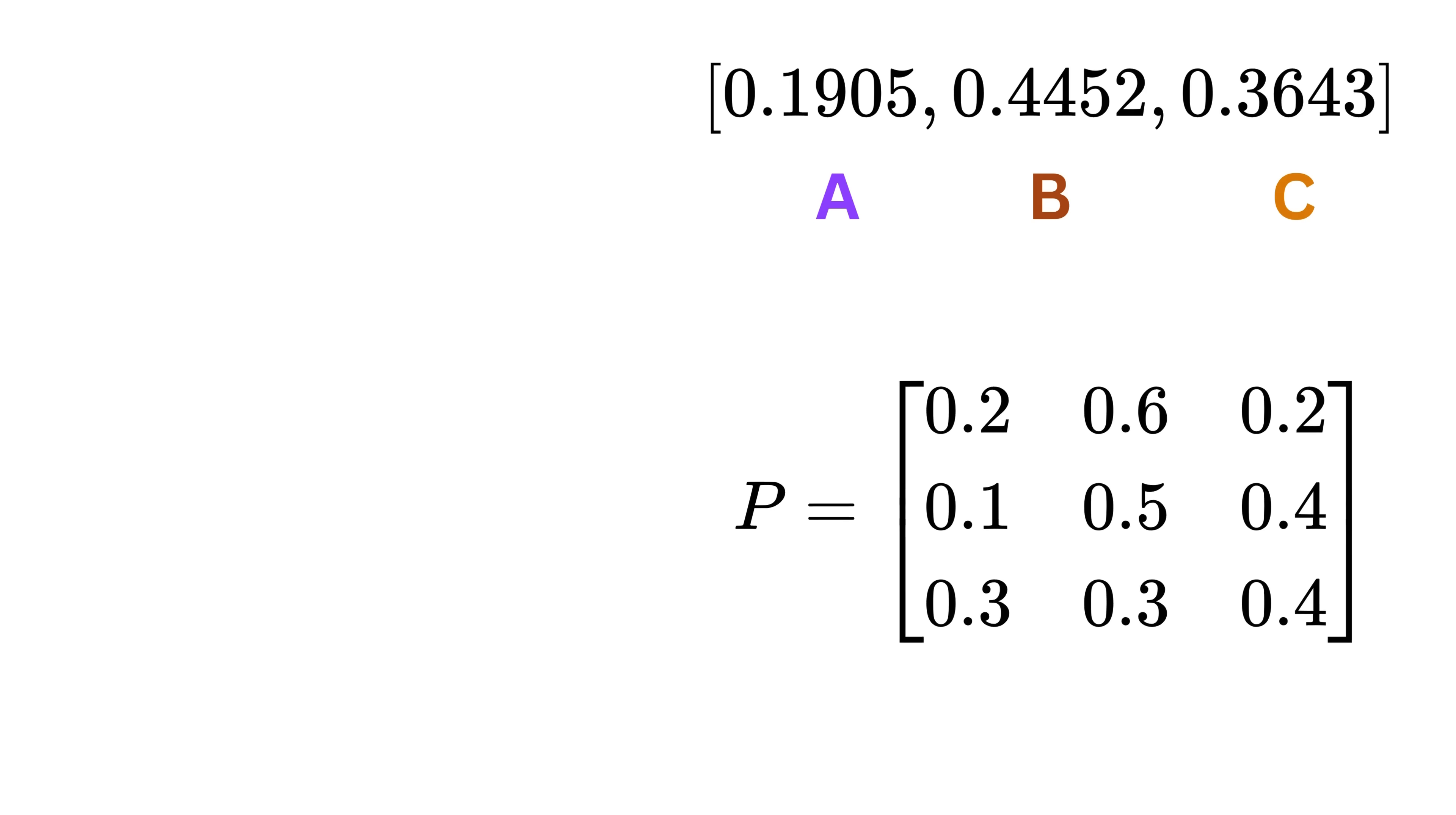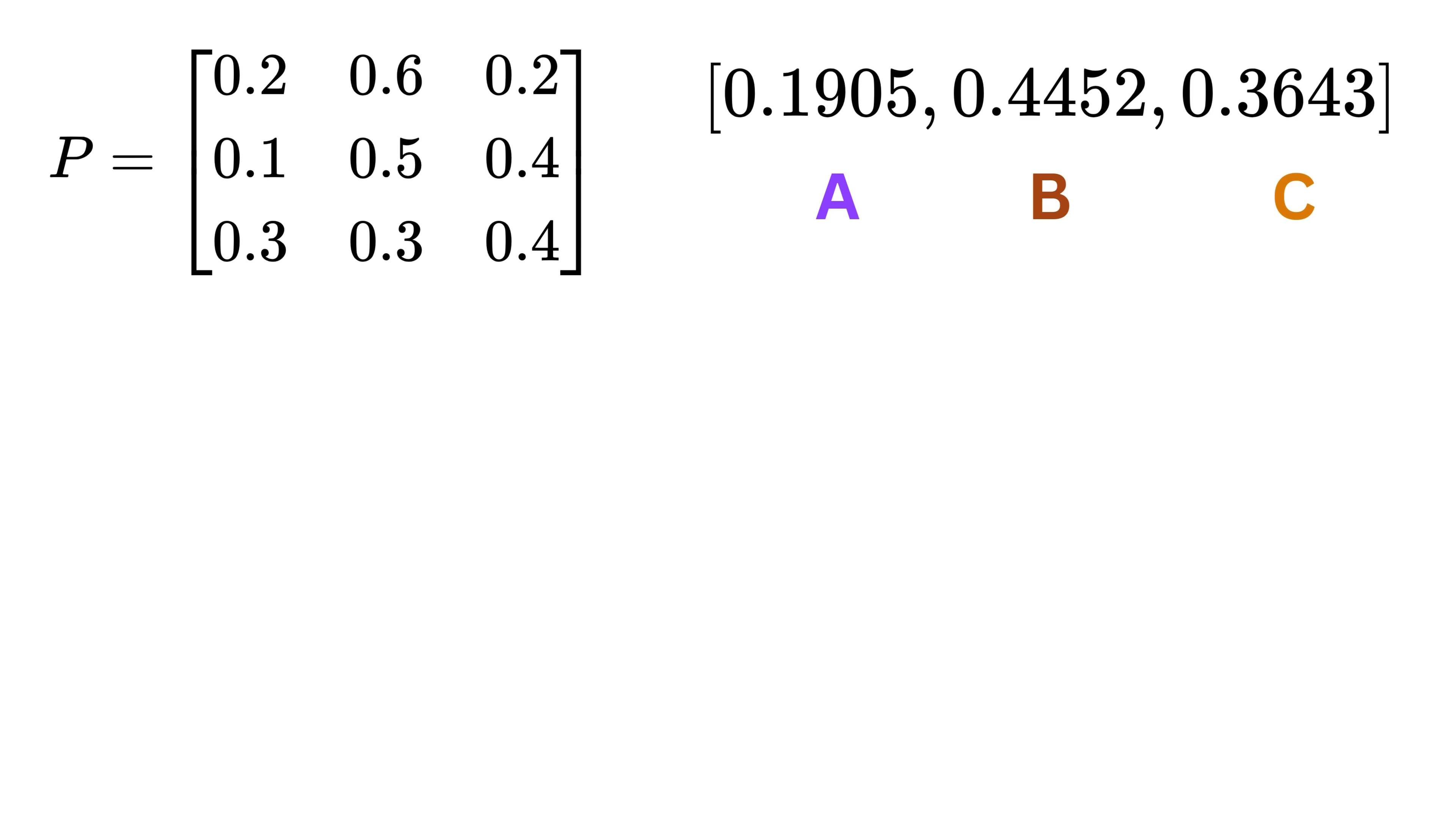Now let's take things a step further and bring in some linear algebra. We'll create a row vector called pi, where each element tells us the probability of the user being on a particular page.